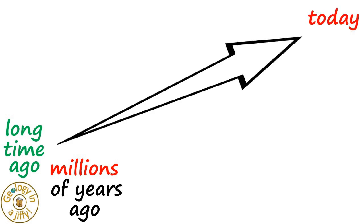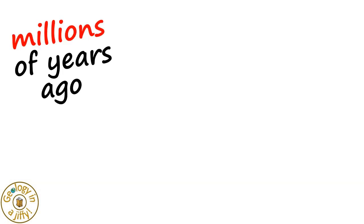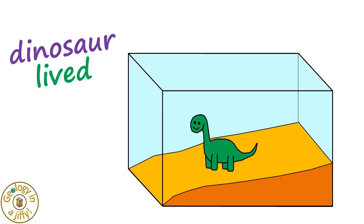The process of fossilisation, starting millions of years ago and possibly continuing up until today, involves a series of steps which start a long time ago, often millions of years ago, where, for example, there was some land upon which a dinosaur lived. Our first step.